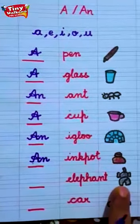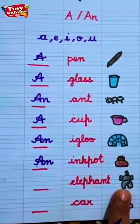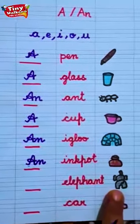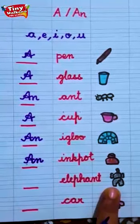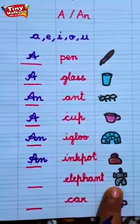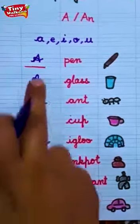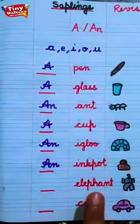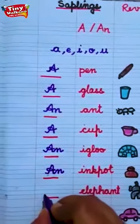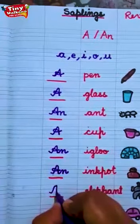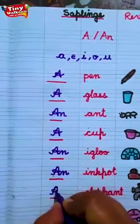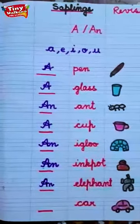Am I right? Kya main sahi hoon? Nahi. I will write An. An ink pot. An ink pot. Now see next. What it is? What is it? Kya hai yeh? Yes. It is an elephant. E sound. E sound is here. Elephant. So I will write An here. An elephant.